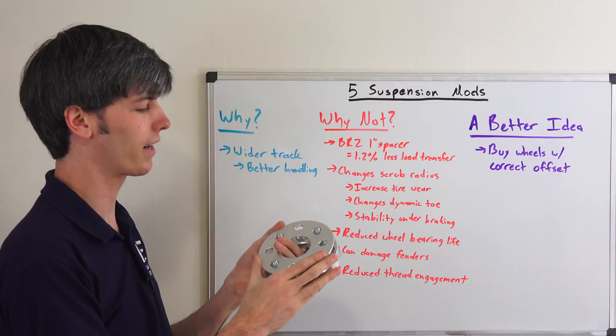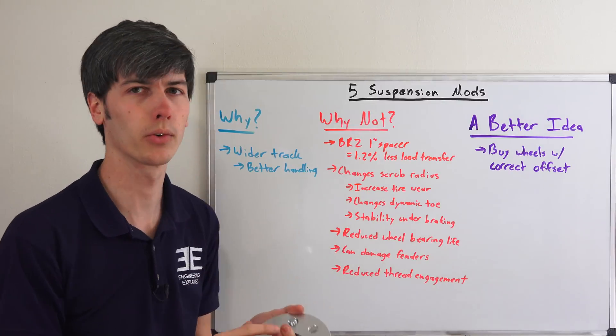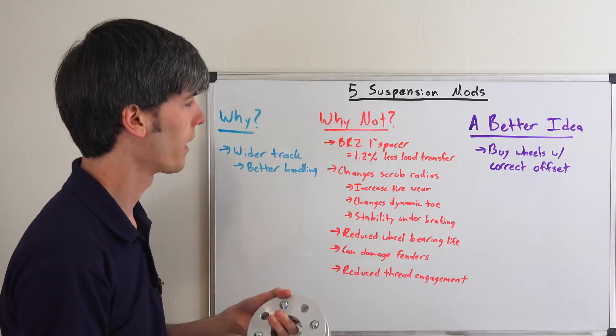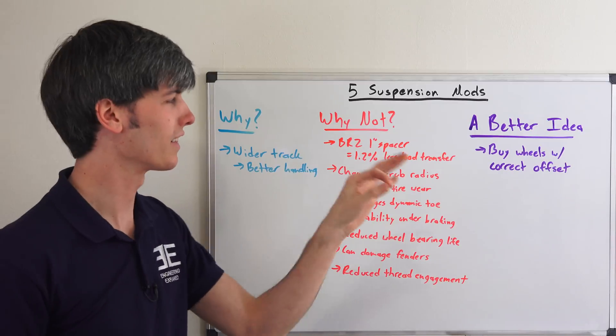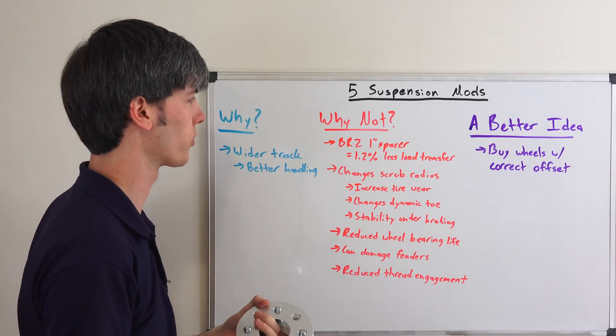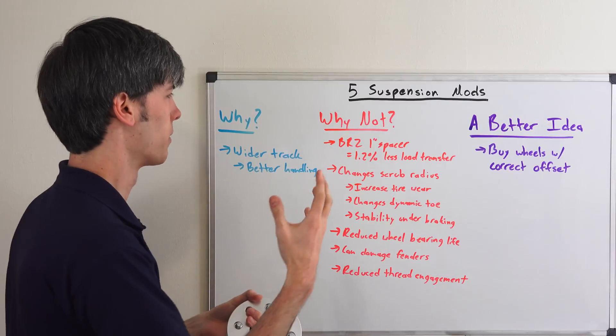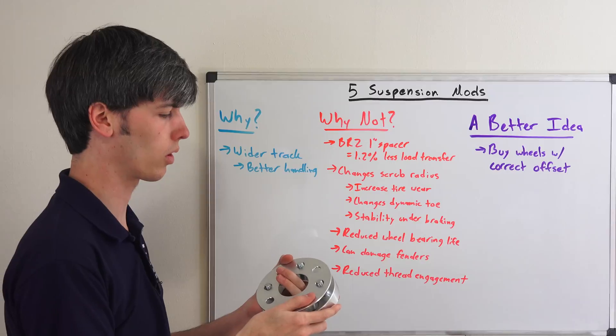But why is this kind of a bad idea? I did a video proving the math behind putting 1 inch wheel spacers on a Subaru BRZ. What the math shows is that it would give you 1.2% less load transfer to those outer wheels as a result of using 1 inch spacers. So the handling benefit is very small.